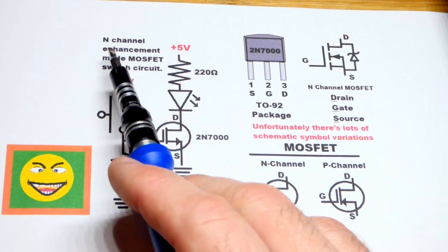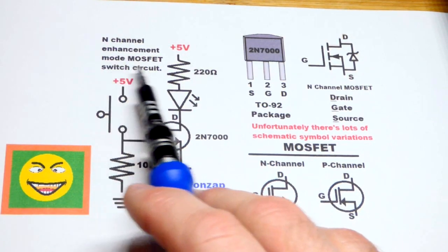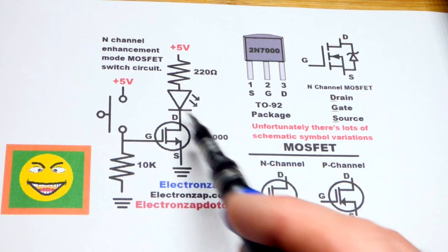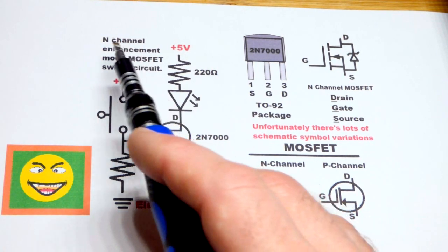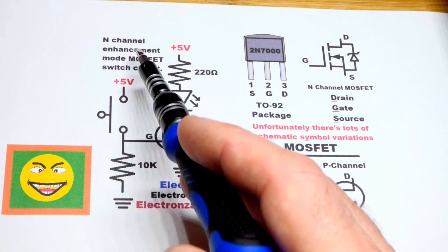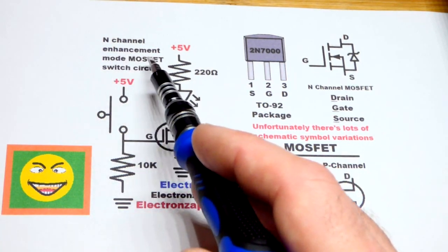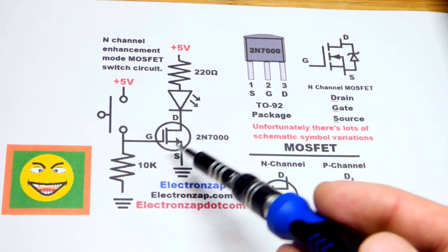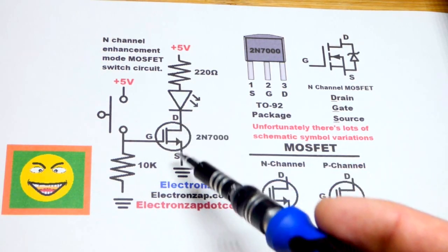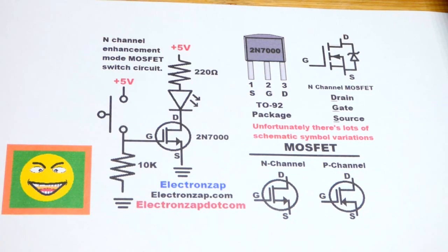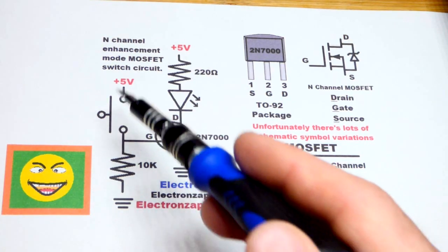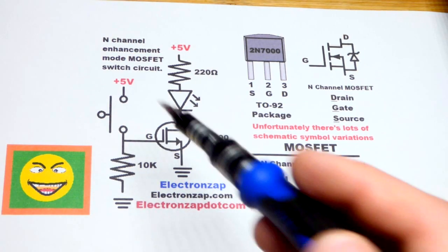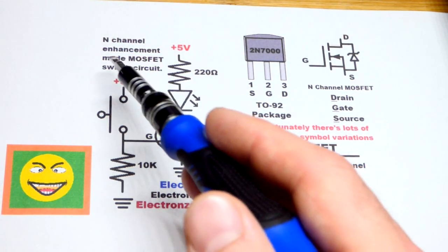So now in this video we're going to look at an n-channel enhancement mode MOSFET. We're going to wire it as a switch. N-channel is a bit more complicated, you can look that up. But the main thing is this is an enhancement mode MOSFET, which means that like the bipolar junction transistor, it does not want to conduct under normal circumstances. You have to give it a signal for it to conduct.